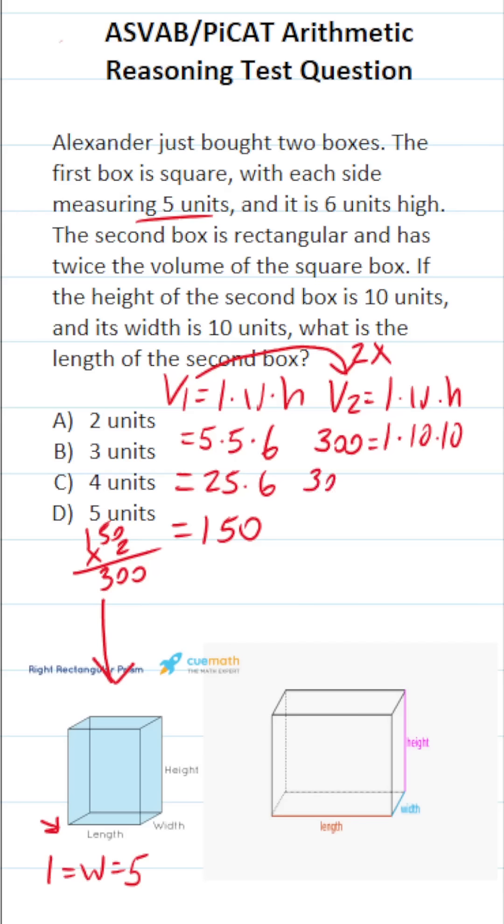So this becomes 300 equals length times 10 times 10, which is 100. To solve for length, we're going to divide both sides of this equation by 100. In doing so, this crosses out, leaving us with length. 300 divided by 100 - just cross out these corresponding zeros. 3 divided by 1 is 3. So the length of this second box is 3 units, which is answer B.